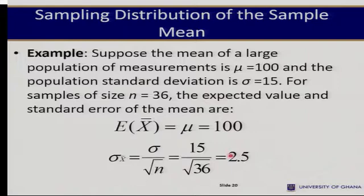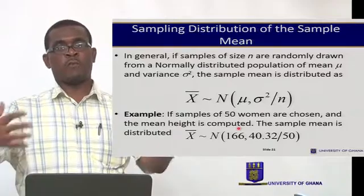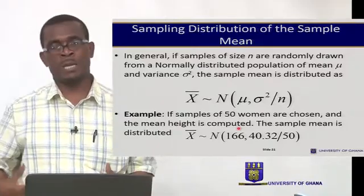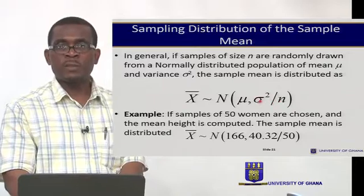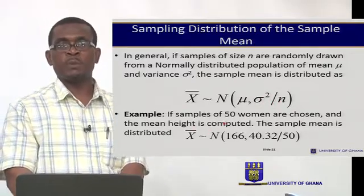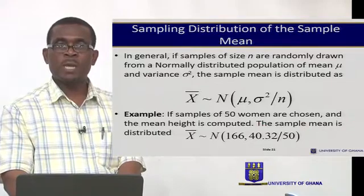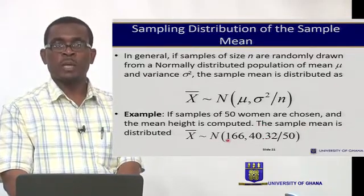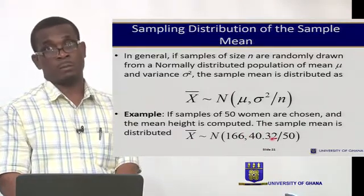You see that the standard error of the sample means is smaller than the standard deviation in the population. If the samples are drawn from a normally distributed population, we expect the sample mean will also be normally distributed with mean mu and variance sigma-squared over n. For example, if samples of 50 women are chosen and the mean height is computed, we expect the sample mean to be normally distributed with a mean of 166 centimeters and variance of 40.32 divided by 50.